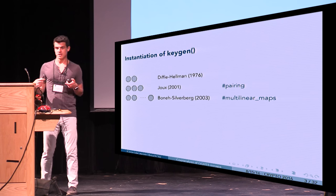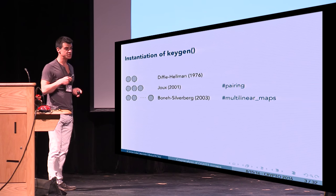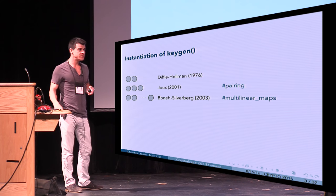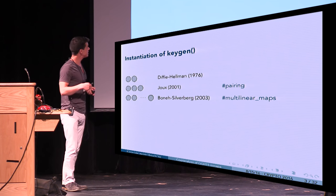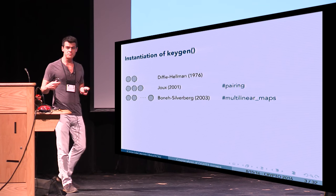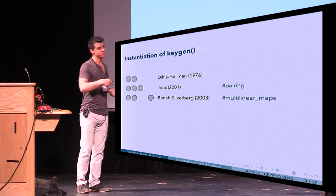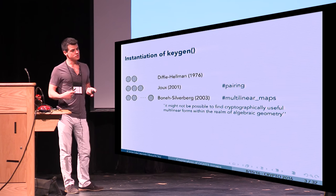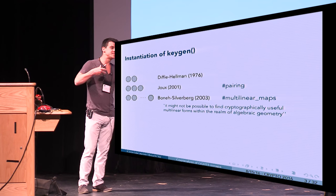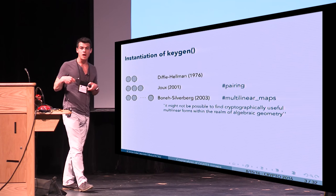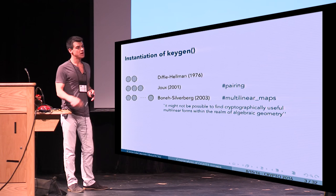For two parties, this is essentially Diffie-Hellman from 1976, where secret values are elements of Zp and encodings are g to the secret value. In 2001, Joux showed how to use bilinear maps to achieve three parties. In 2003, Boneh and Silverberg said that with a multilinear map you can achieve n parties, but they also noted it might not be possible to construct multilinear maps using the same techniques as pairings — it remains an open problem.